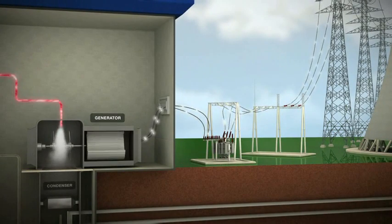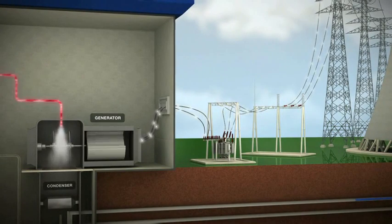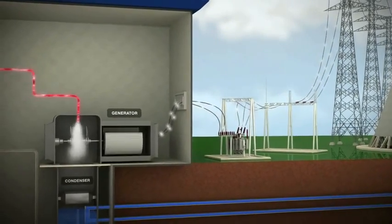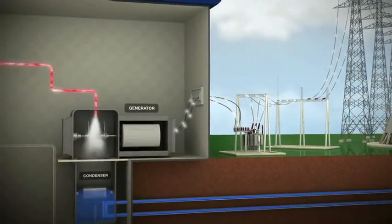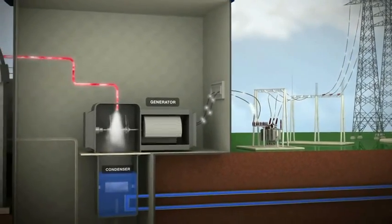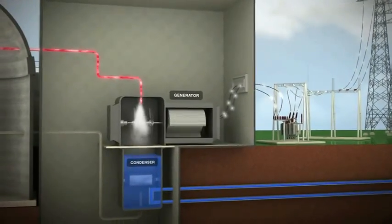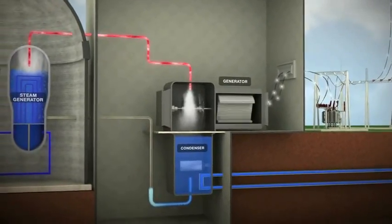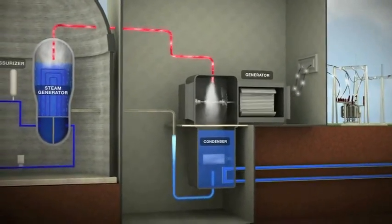After the steam is used in the turbines, it is drawn into a condenser, where it is cooled and condensed back into water and pumped back to the steam generator to be heated and reused.